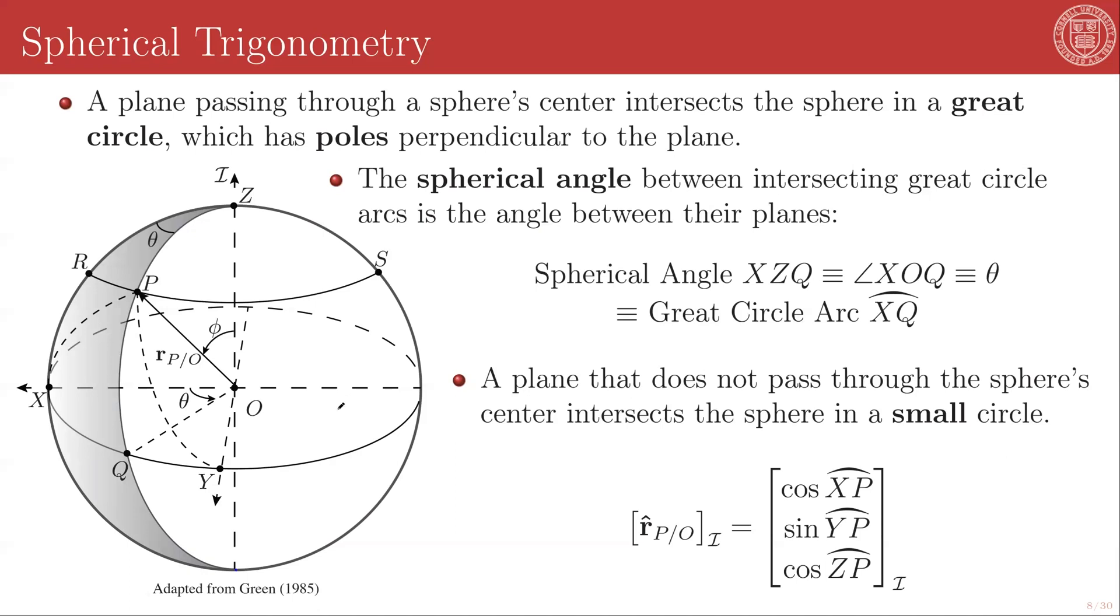The spherical angle between intersecting great circle arcs is the angle between their planes. So as a practical example for this diagram, the spherical angle X, Z, Q, so X to Z to Q, so you'd follow these arc lengths along, is going to be exactly the same as the angle between the planes, between the relevant planes of those circles. And so in this case that is the angle theta. So the spherical angle X, Z, Q is theta, is the same as this planar normal angle theta in the planar projection. And it is also exactly equivalent to the great circle arc from X to Q, this part of the great circle.